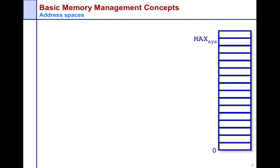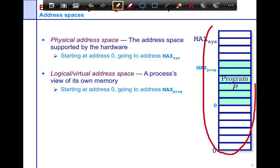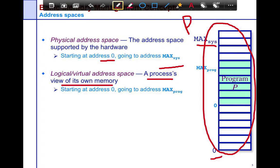Let's take a look at the basic idea of memory management. What we have shown on the right is physical memory — some amount of physical memory starting at address zero going all the way to maxSys. Physical address space is the address space supported by the hardware, starting at address zero and going all the way to maxSys — this is your DRAM, the thing you buy and plug into your system. A logical or virtual address space is the process's view of its own memory. For example, if you have one process needing two kilobytes and another needing four kilobytes, you want both to run on the physical memory at the same time, because with four gigabytes you have more than enough. But each process itself has a limited view of its own memory.